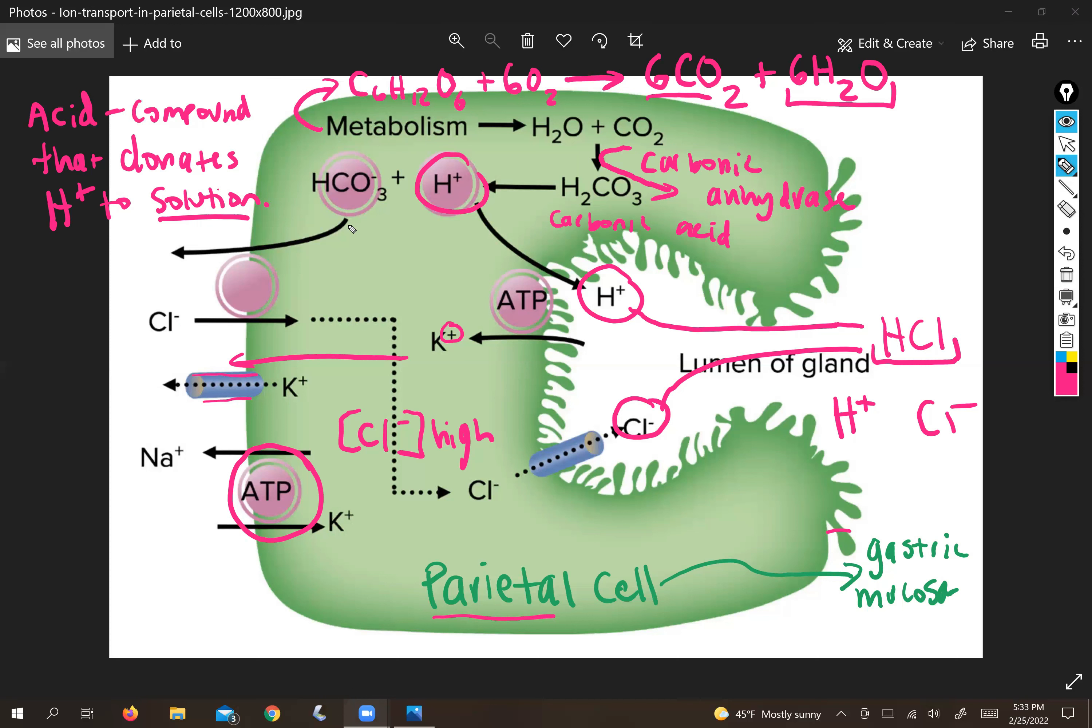And metaplasia, which is the transition of one cell type to another cell type, is usually a warning sign of cancer. So we want to avoid that. So it's important for us to be able to keep this hydrochloric acid confined to the stomach and away from our esophagus.